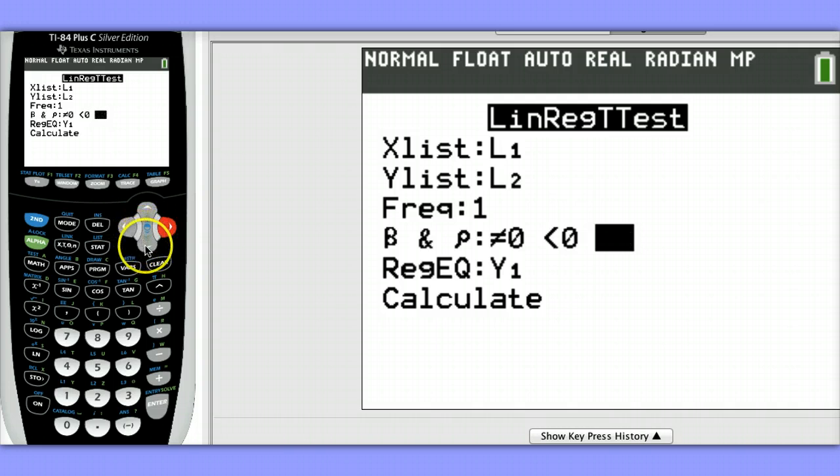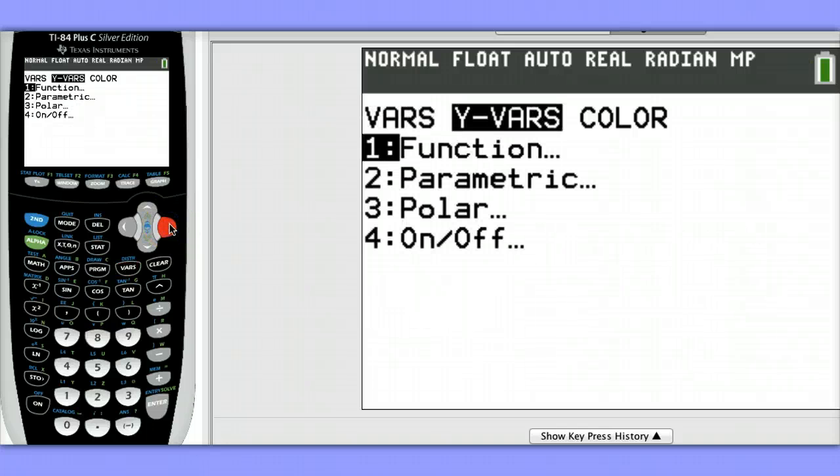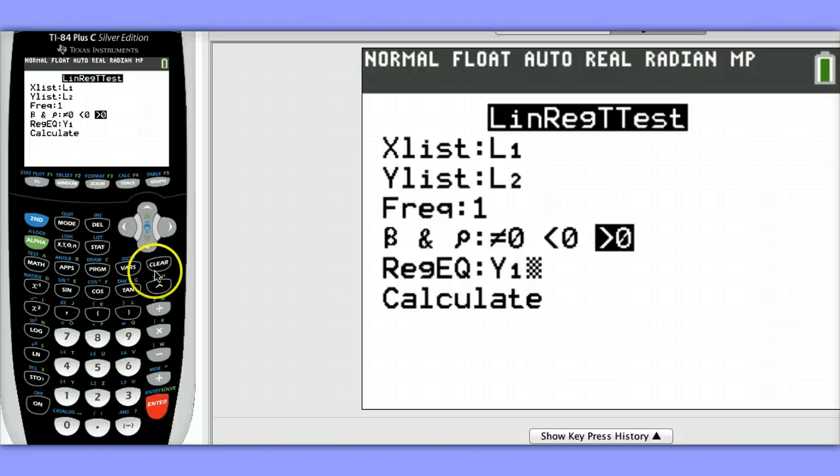And I'm going to store my regression equation in Y1. To get that value there, I hit VARS, went to YVARS, chose Option 1 function, and chose Y1.